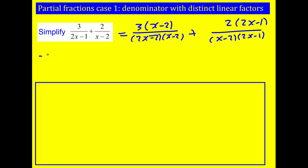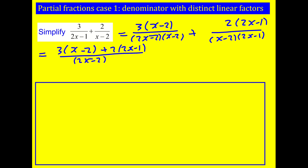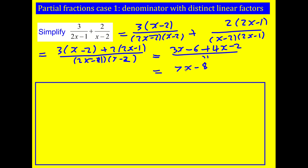Now these are the same denominator, so I can combine them. Then I can expand this out, so I'm going to get 3x minus 6 plus 4x minus 2, all over the same denominator, which equals 7x minus 8. This is now my final answer, so I'll write it out again: all over (x minus 2)(2x minus 1).